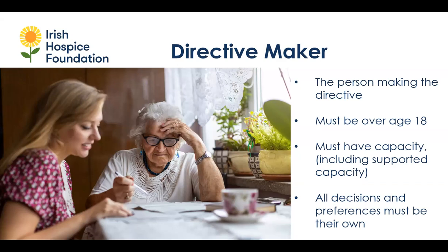The directive maker is the person making the directive. They must be over the age of 18 and have capacity — though capacity here means even if you need support or assistance in making a decision or having options explained to you. If someone needs help reading a document or explaining options, that's within capacity, but their final decisions and preferences must be their own, and they cannot be coerced into signing something they didn't write or don't wish to sign.